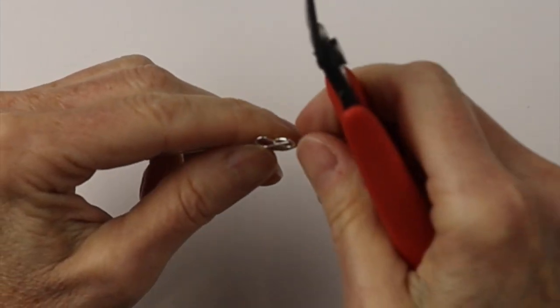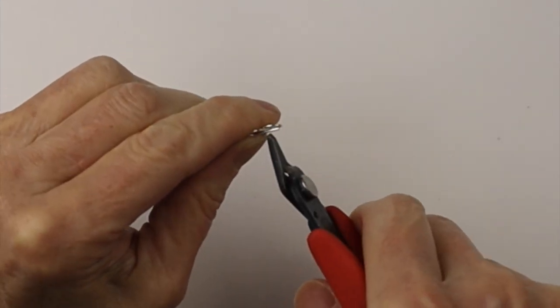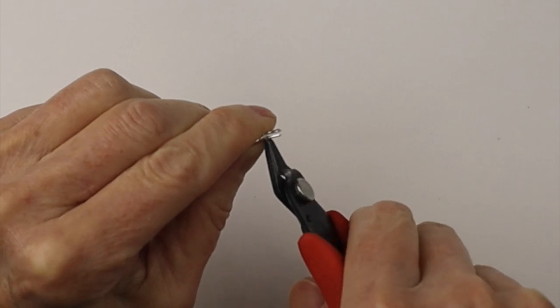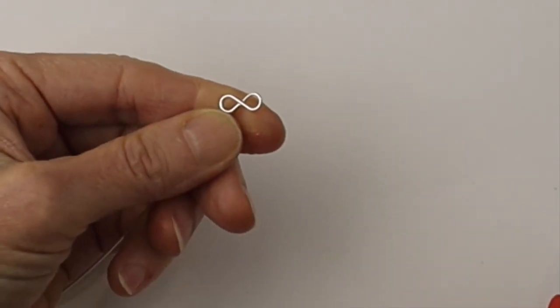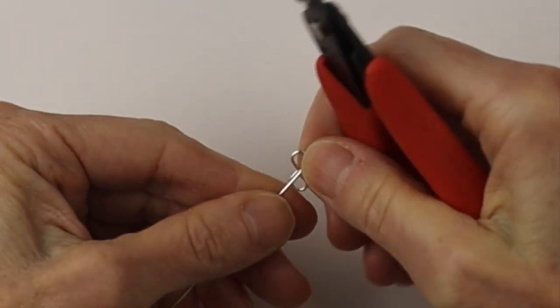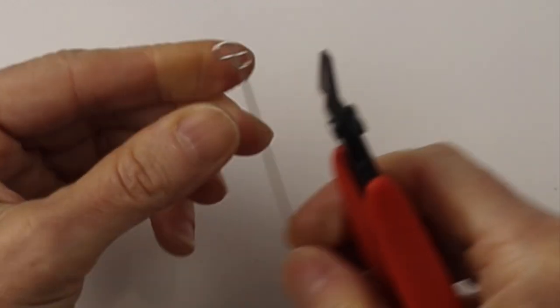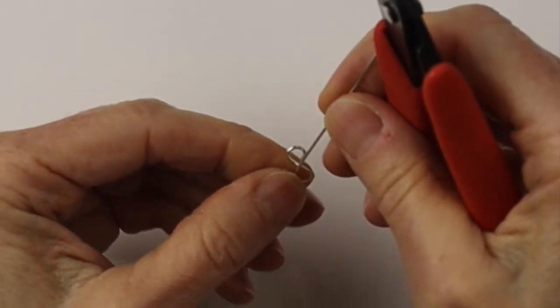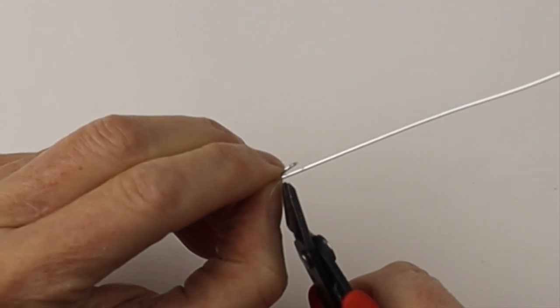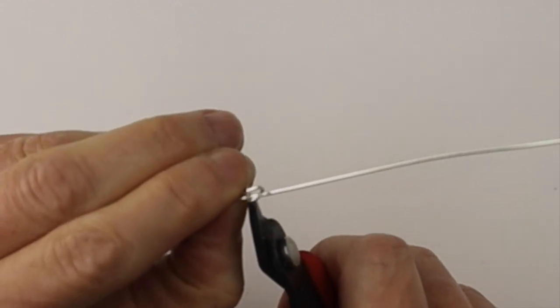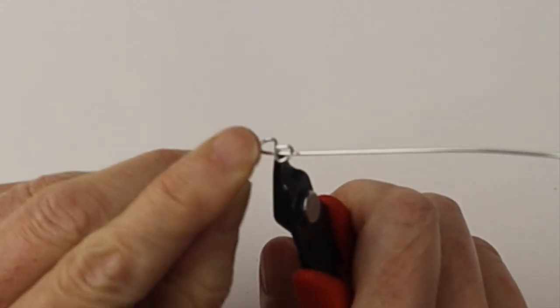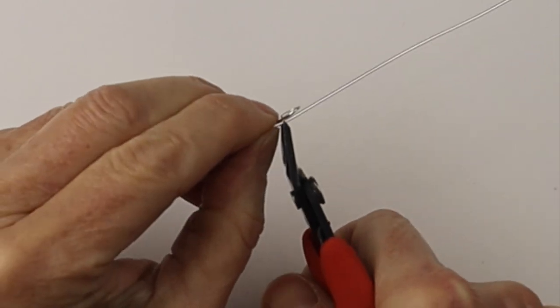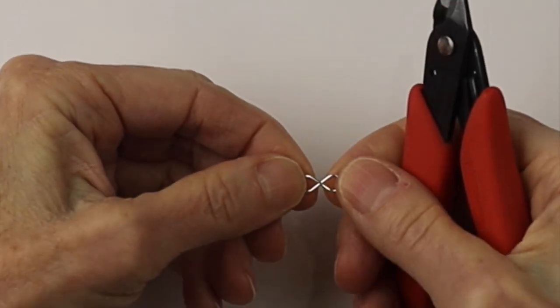Now I'm using the Xuron flush cutters, use the flat side to cut the wire so it will sit flush against the middle wire. We're going to flip it around and then we're going to cut it flush on the other side. Make sure you have some really good quality flush cutters to do this so it'll be nice and straight.